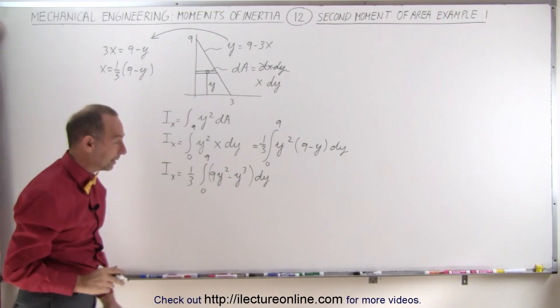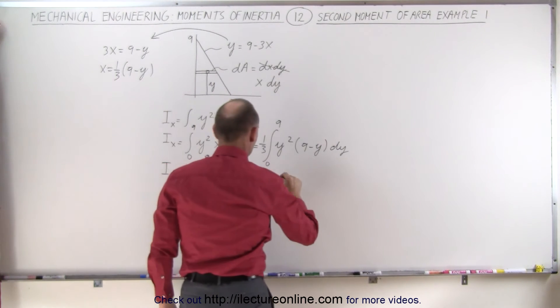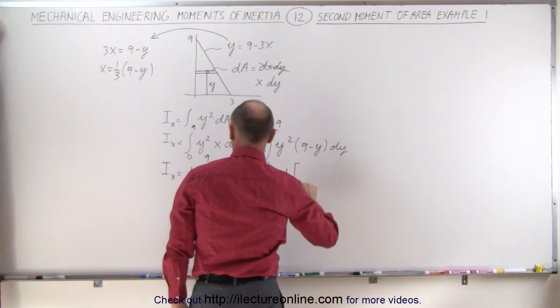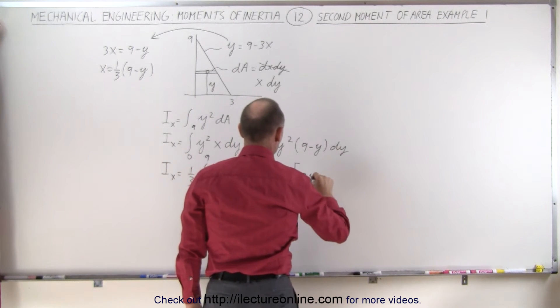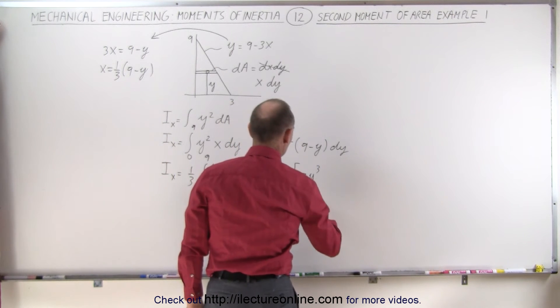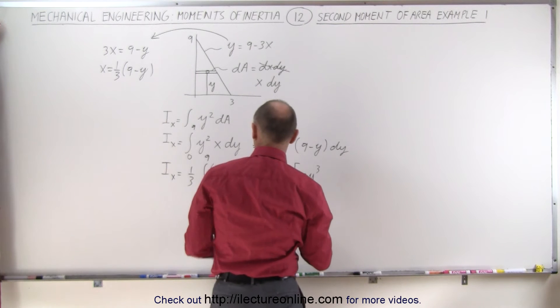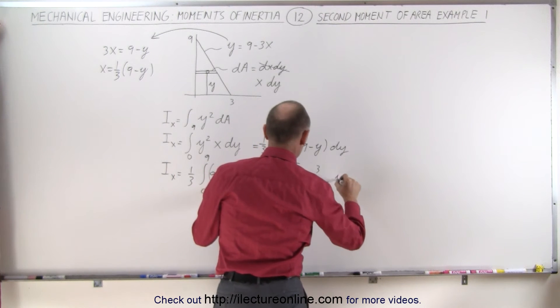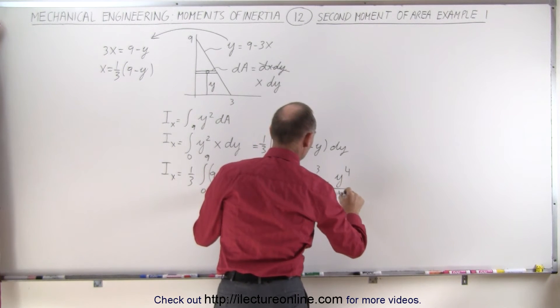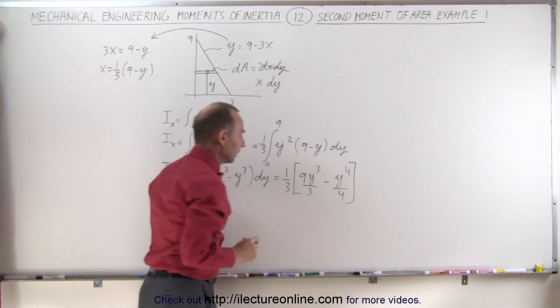And now we're ready to integrate that integral. This is equal to one third times 9 y cubed over 3 and that would be minus y to the fourth over 4.